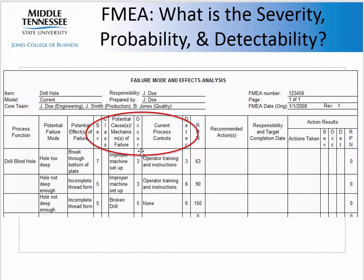Occurrence is the likelihood of occurrence — if it's more likely to occur, we put a larger number; less likely gets a smaller number. Then finally, detection is how likely we are to find the error. A small number means we're more likely to detect it, and a larger number means we're not likely to detect it. The consequences of not detecting an error — building up an inventory of defective materials or failing in a service on a large scale — are more likely to happen if we don't detect it.